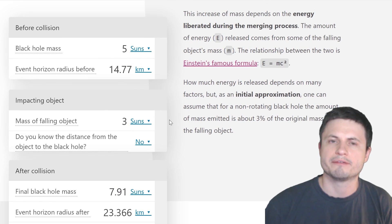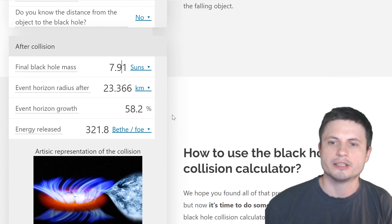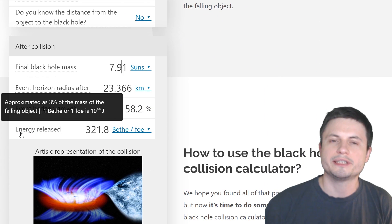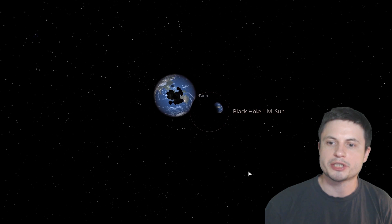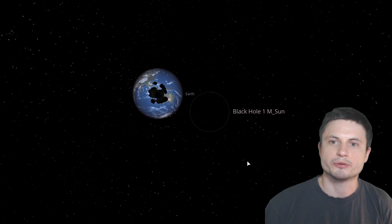But why exactly is it not eight masses of the sun? I mean, three plus five should be eight, right? Well, during the collision, we also released a lot of energy, mostly because of the relativistic effects caused by the acceleration of matter here, as it falls into the black hole.